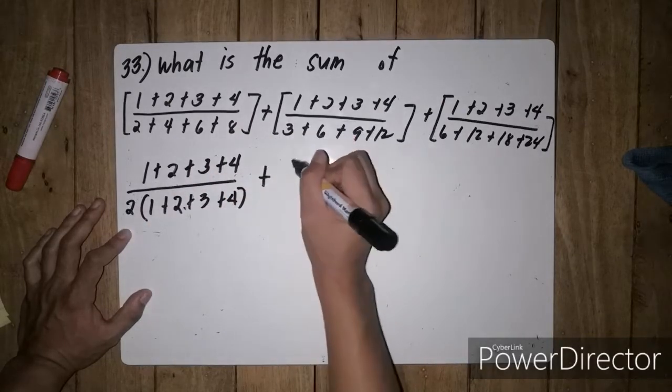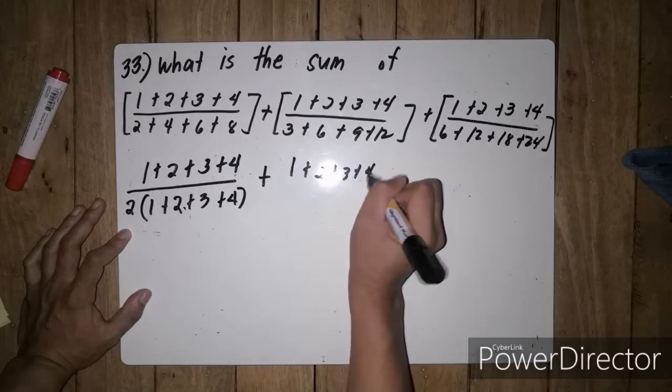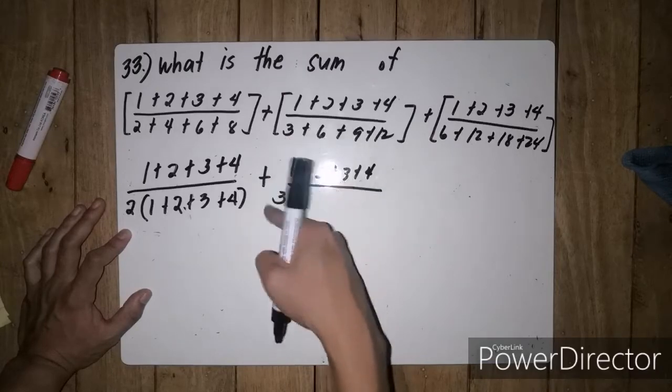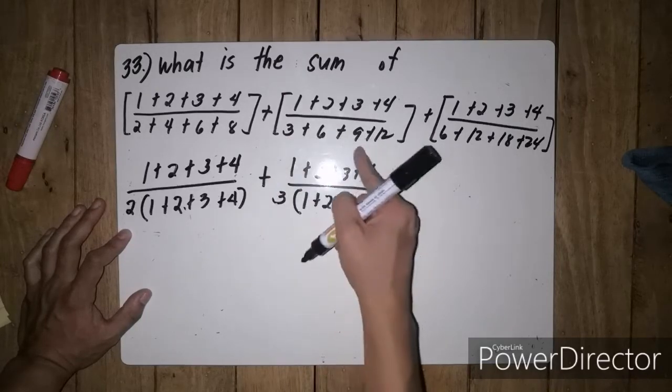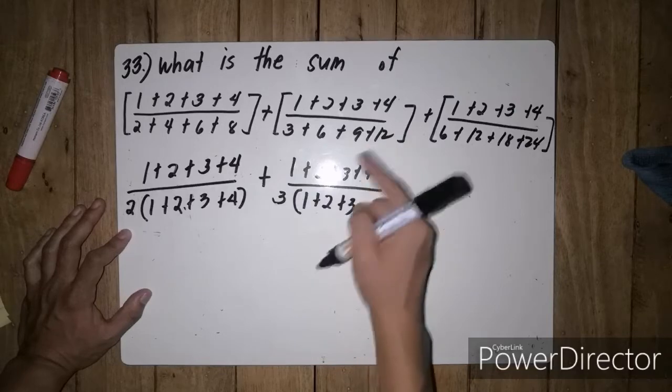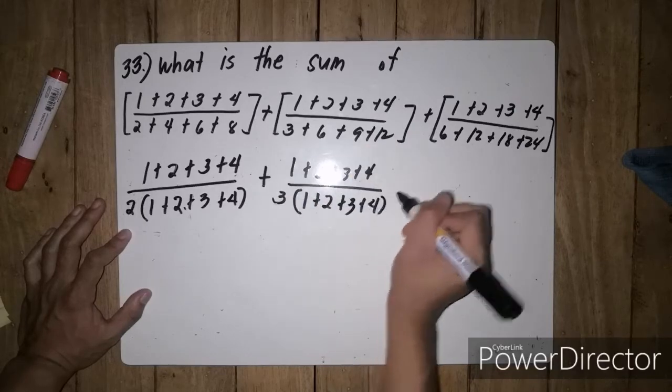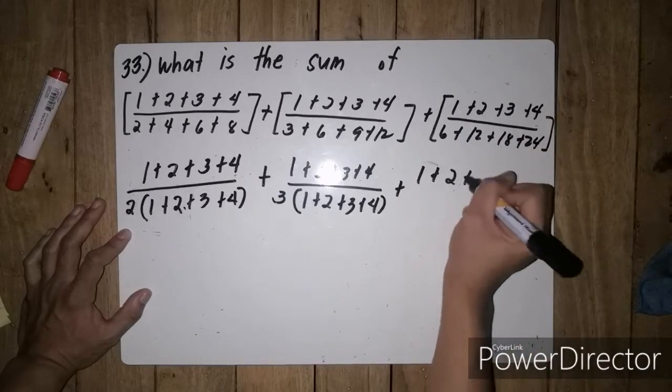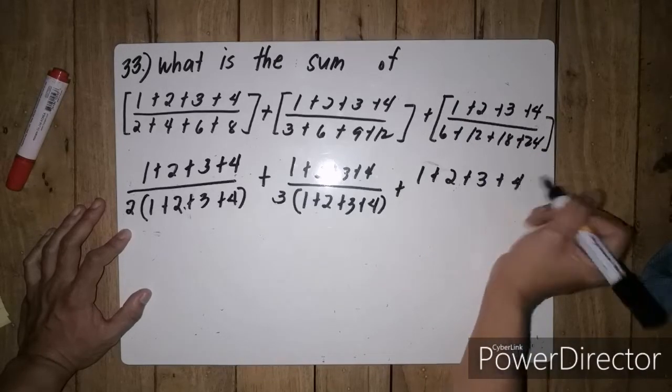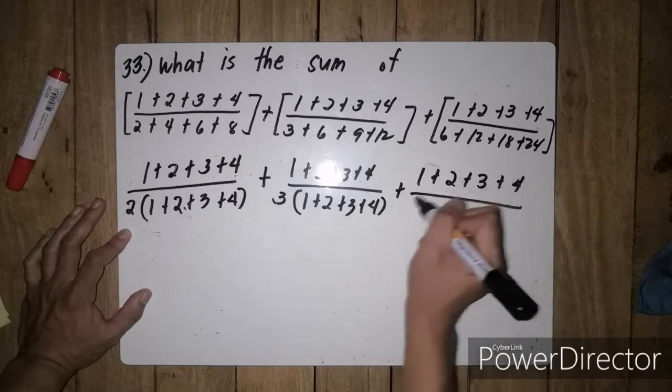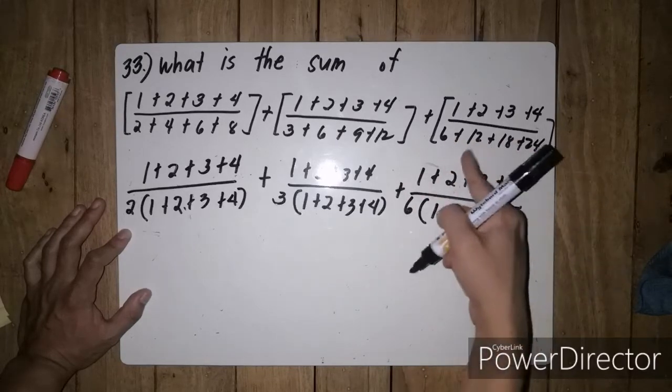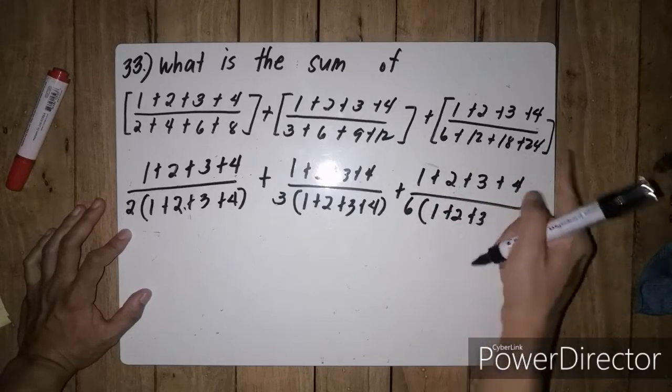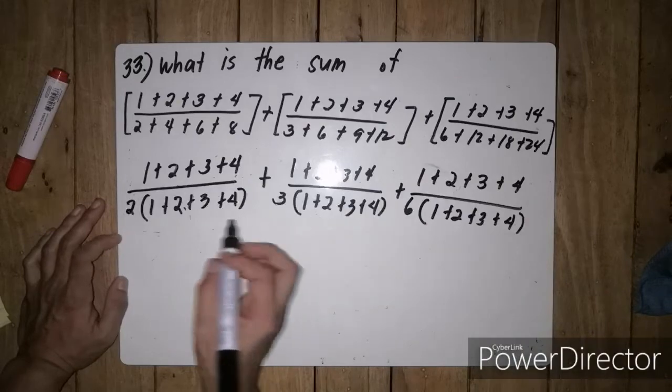Plus 1 plus 2 plus 3 plus 4 divided by, with common factor 3: 3 divided by 3 is 1, 6 divided by 3 is 2, 9 divided by 3 is 3, 12 divided by 3 is 4. Plus 1 plus 2 plus 3 plus 4 divided by, with common factor 6: 6 divided by 6 is 1, 12 divided by 6 is 2, 18 divided by 6 is 3, 24 divided by 6 is 4.